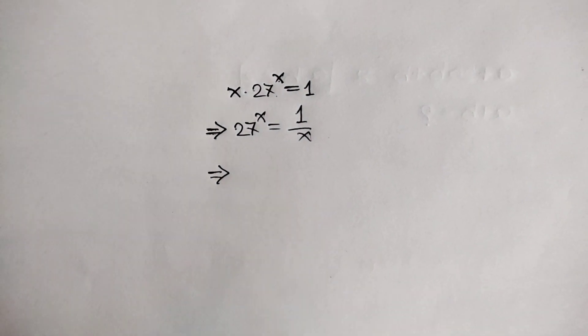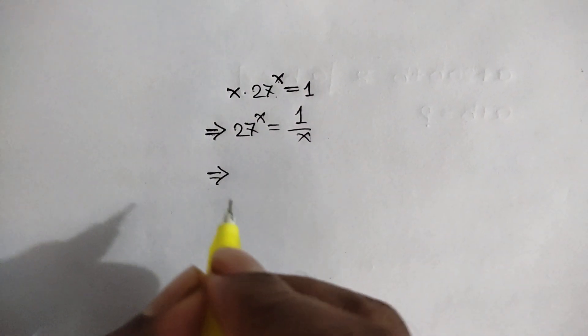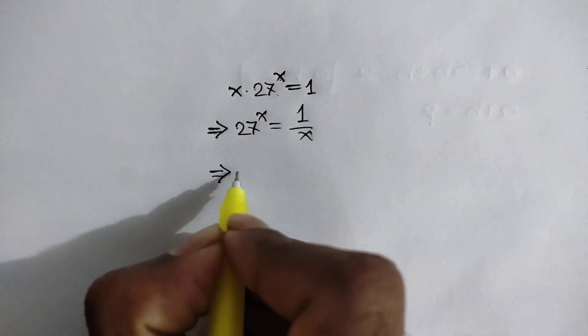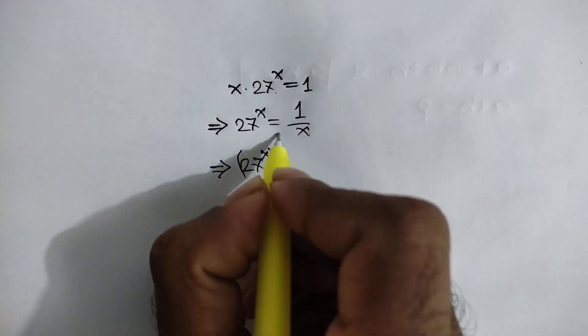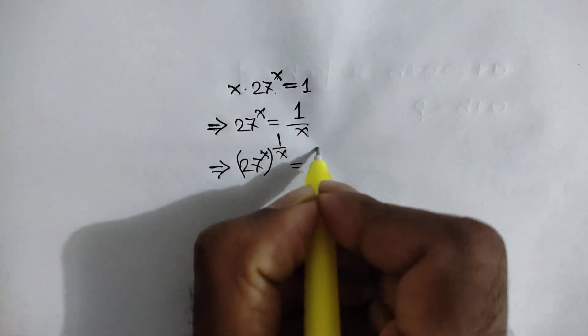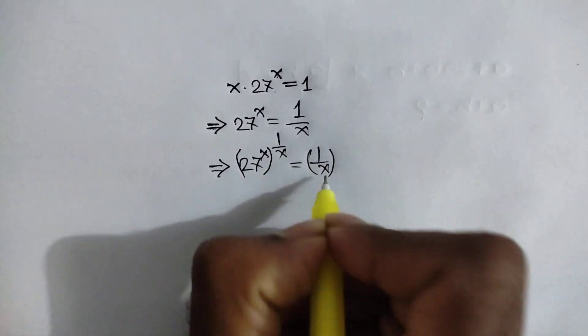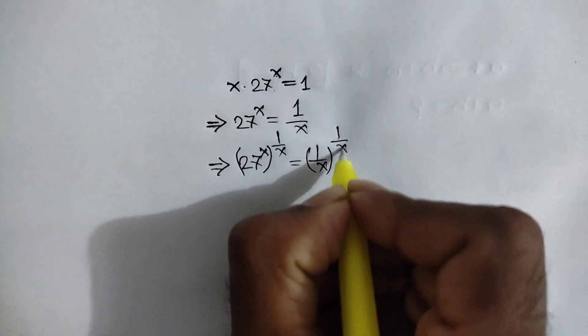Raising both sides by 1 over x, we will have 27 to the power x whole to the power 1 over x is equal to 1 by x to the power 1 over x.